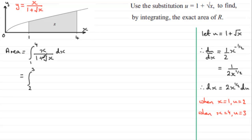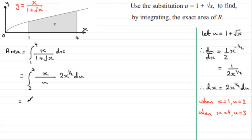We can see that 1 plus root x is just u, so we substitute that in. We replace dx with 2x to the power half du. Tidying up, we get 2 times the integral from 2 to 3 of x to the power 3 over 2 divided by u, integrated with respect to u. But we still have x in there.